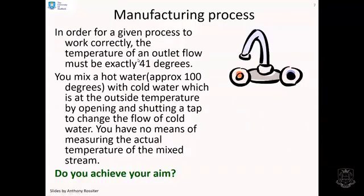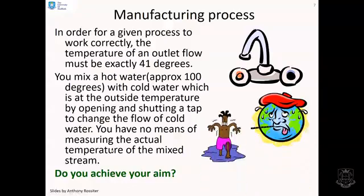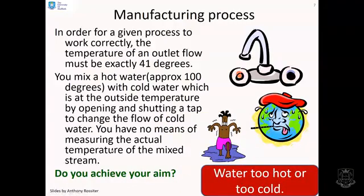A manufacturing process. In order for a given process to work correctly, the temperature of an outlet flow must be exactly 41 degrees. You mix hot water at approximately 100 degrees with cold water at the outside temperature by opening and shutting a tap to change the flow of cold water. But here's the critical point. You have no means of measuring the actual temperature of the mixed stream. So are you likely to get your 41 degrees? Well, obviously not. You're most likely to end up far too hot or far too cold because you've made a guess and you've got no way of measuring whether it's worked or not.